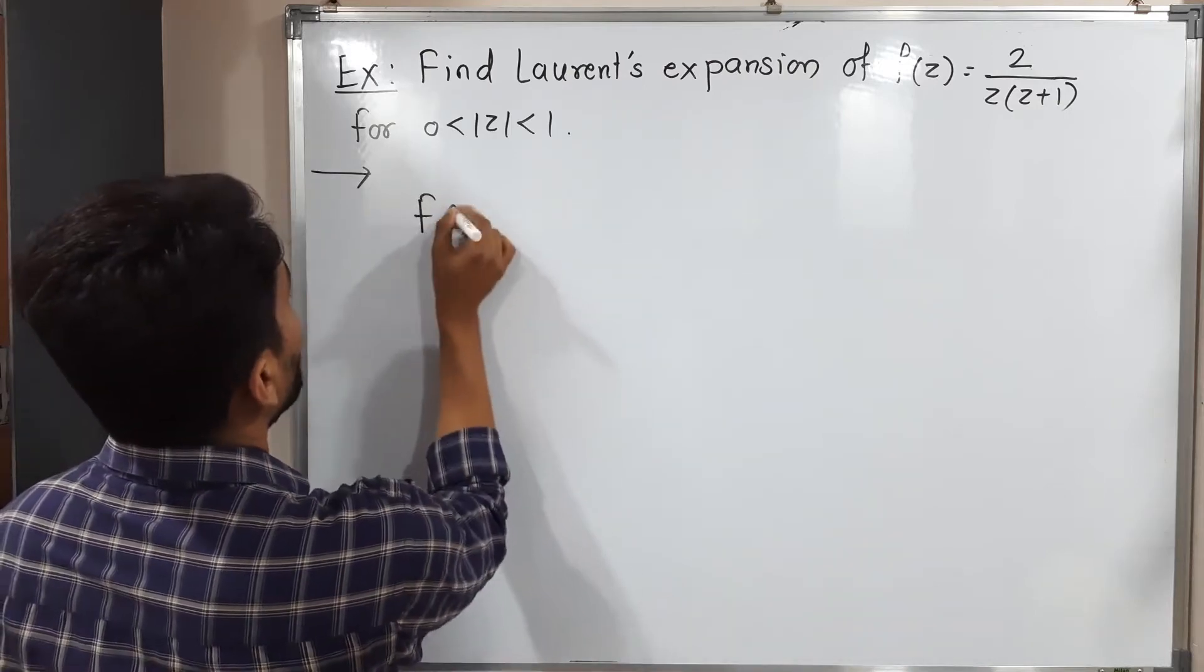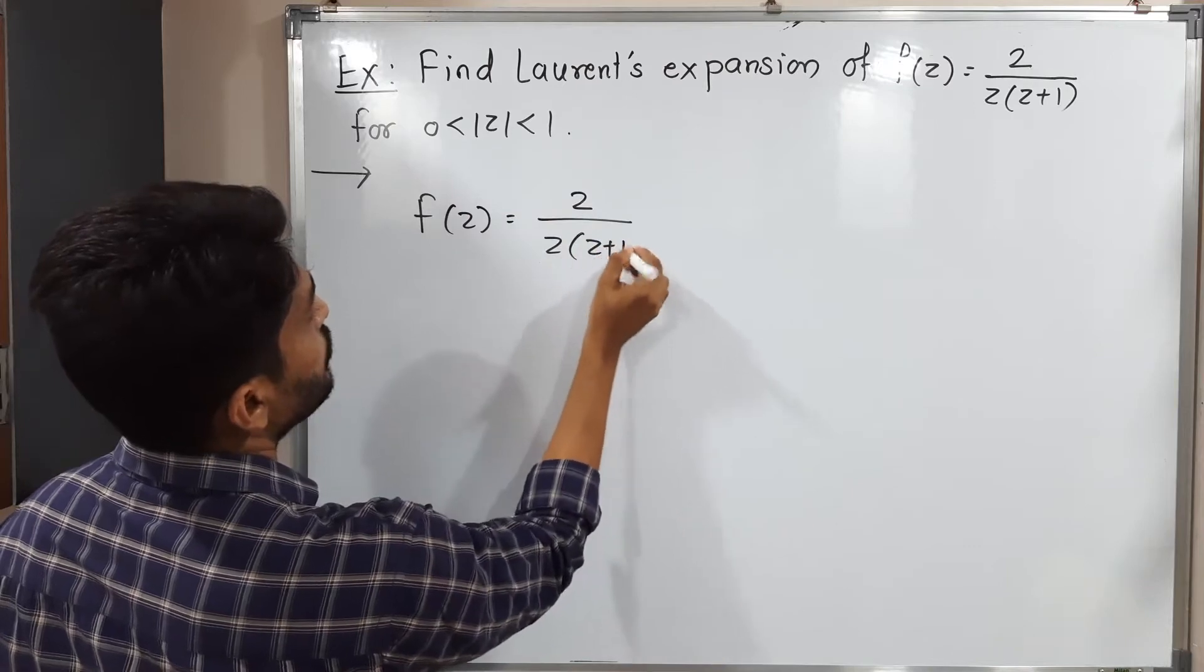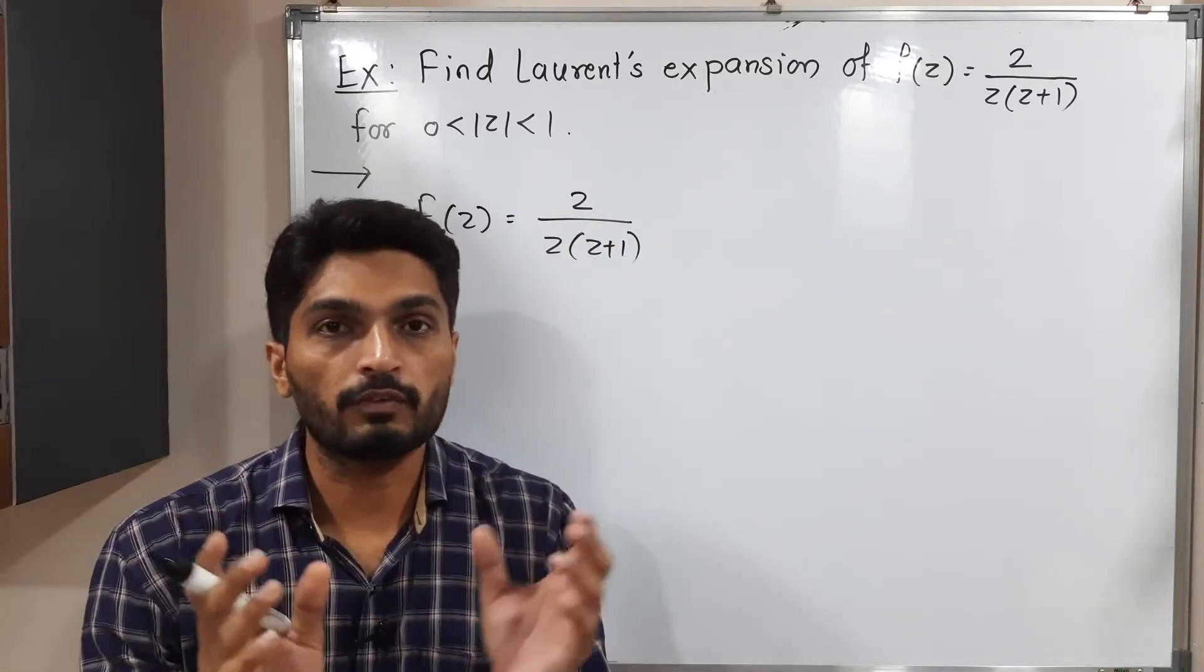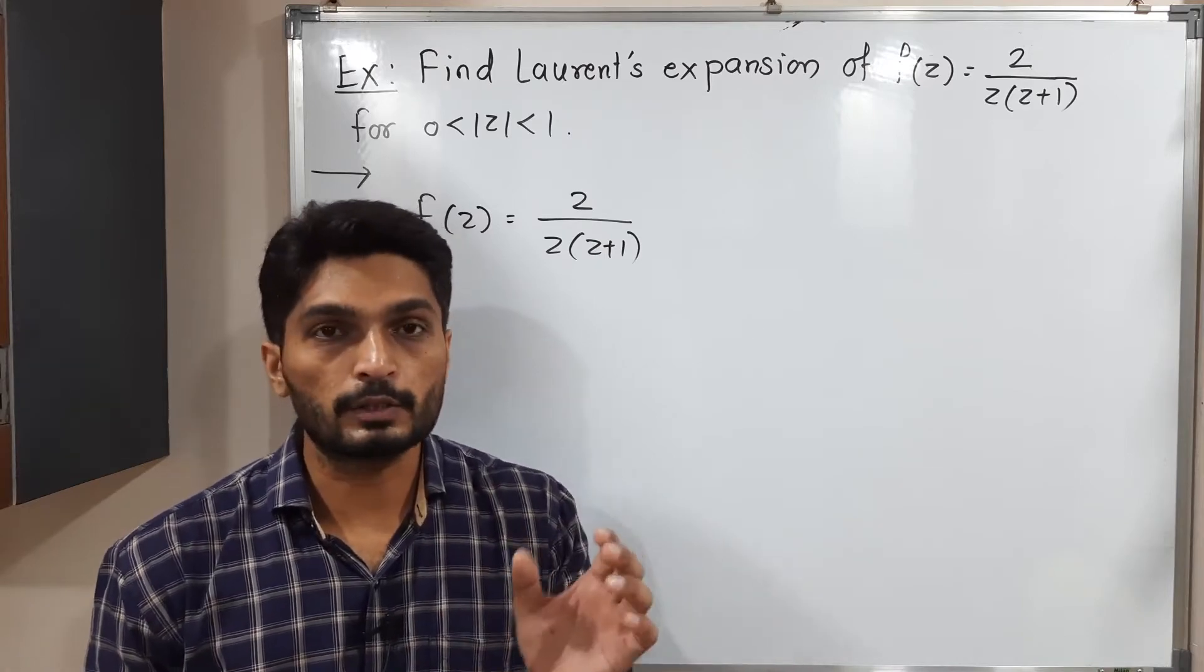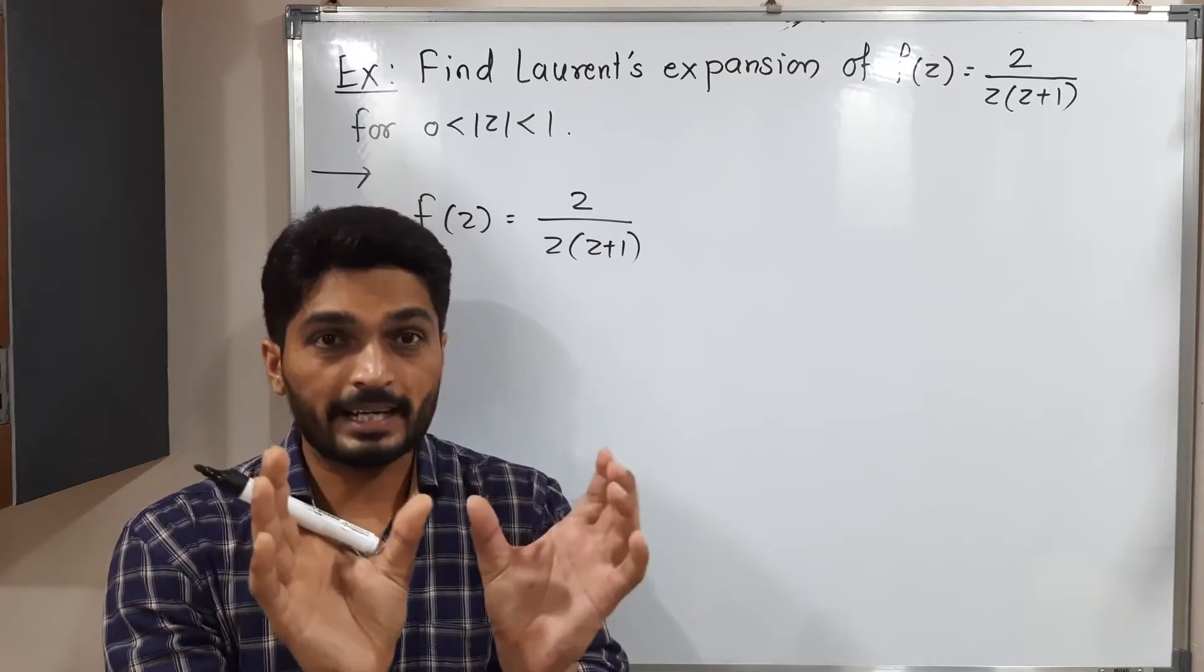So let us start with the given function. We have f(z) equals 2 upon z times z plus 1. They have already given the denominator as a product of factors, z into z plus 1. So our first task is to make this bracket separate.